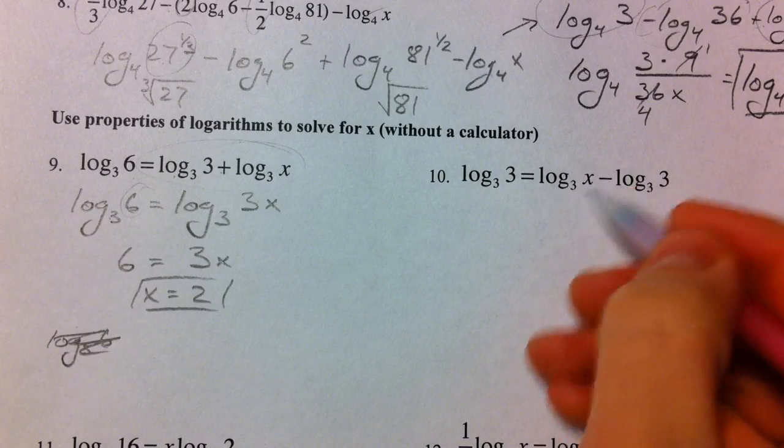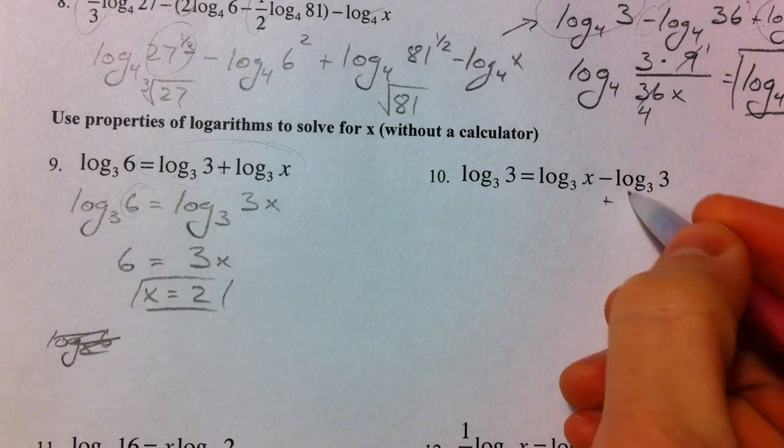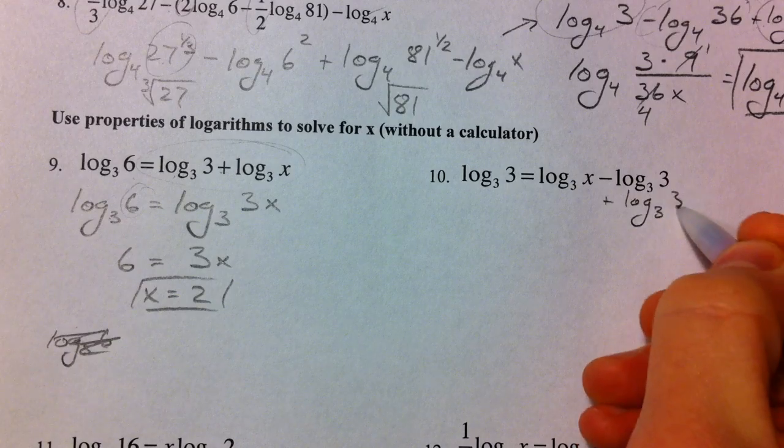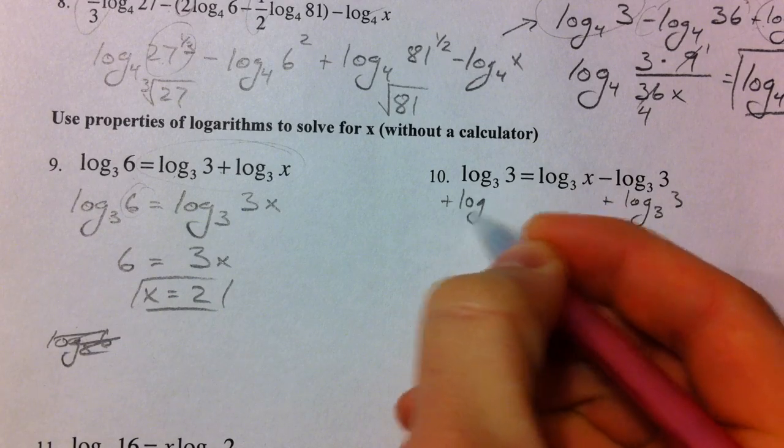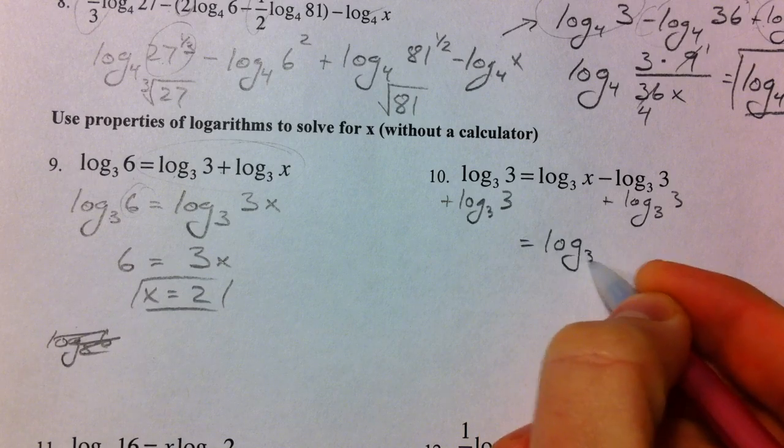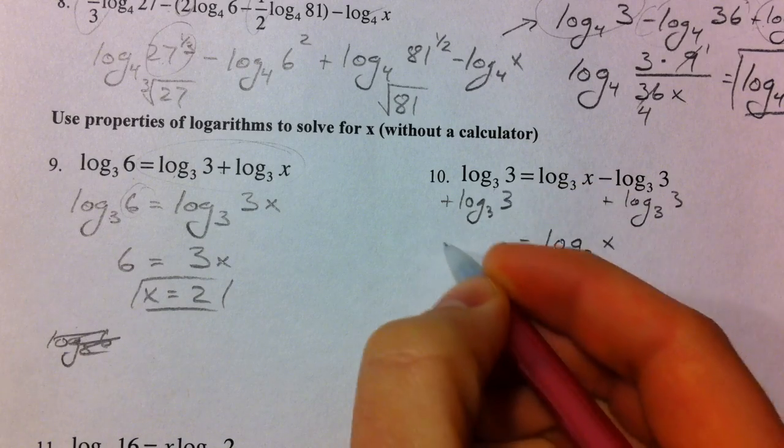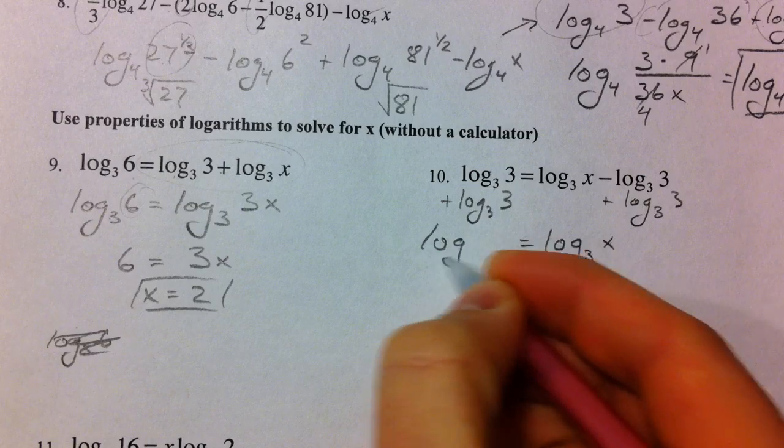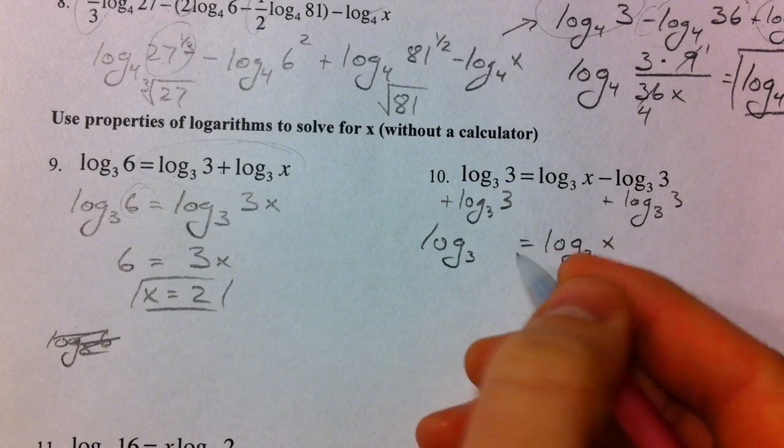So let's isolate the log of x first by adding log base 3 of 3 to both sides. 2 logs that are added are the same as one log that is multiplied.